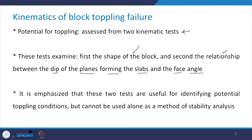In this case, there are two things which are to be tested. The first one is the shape of the block and the second one is the relationship between the dip of the planes forming the slab and the face angle. It is emphasized that these two tests are useful for identifying the potential toppling conditions, but these should not be used alone as the method of stability analysis — we need to be careful about it.